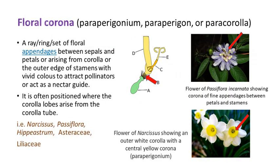Floral corona are also called parapetalogia, parapetalon, or paracorolla. This is a ray or a ring with a set of floral appendages between sepals and petals, or arising from the corolla or the outer edge of stamens with vivid colors to attract pollinators, or acting as a nectar guide. It is often positioned where the corolla lobes arise from the corolla tube. These can be found in species such as narcissus, passiflora, hippeastrum, and families such as Asteraceae, Liliaceae, and so on.